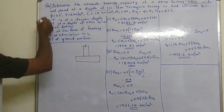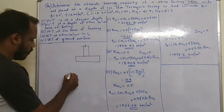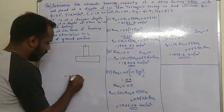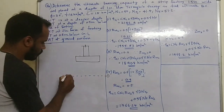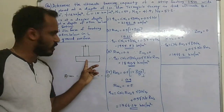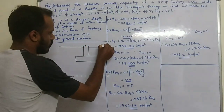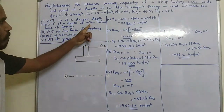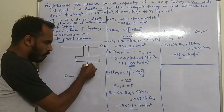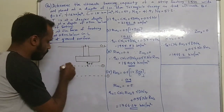We consider the total conditions. Condition 1: the water table is at a deeper depth, much below the base of the footing. Section 1-1 refers to this case. Condition 2: the water table has a depth of 0.5 meters below the base of the footing.